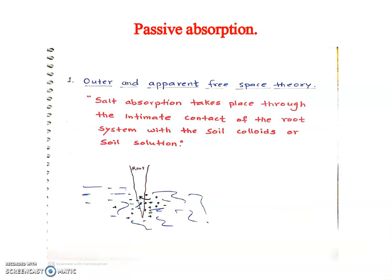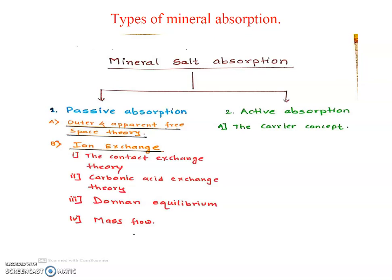Micro and macro elements are both required for plants for growth and development. These elements are called as essential elements, and they are absorbed by the plants by two ways — passive absorption and active absorption.